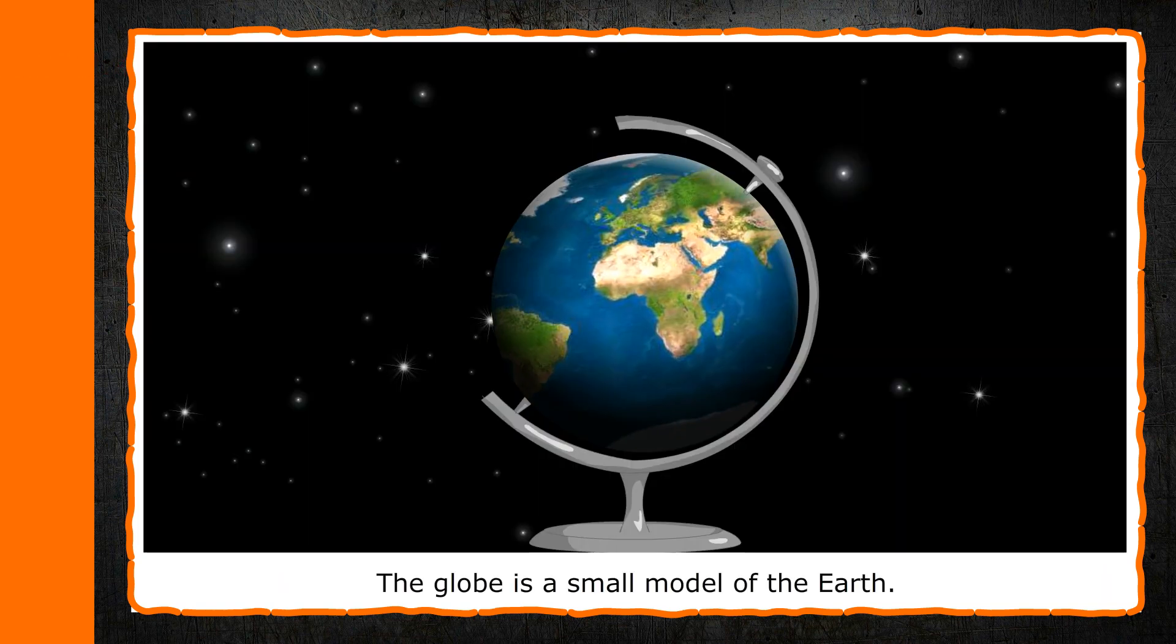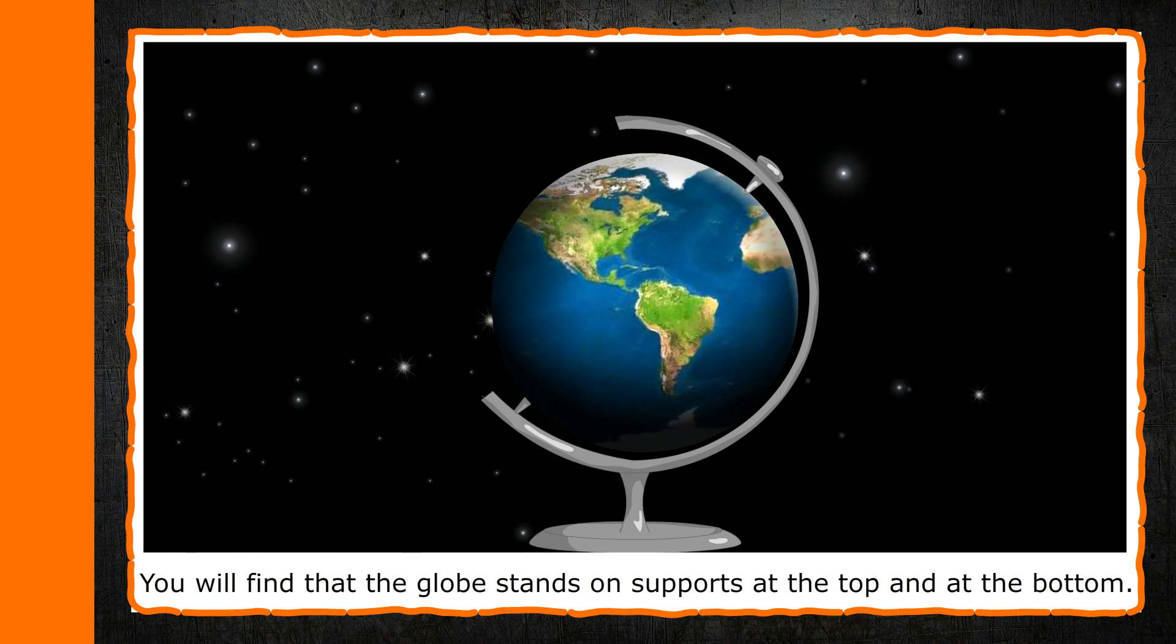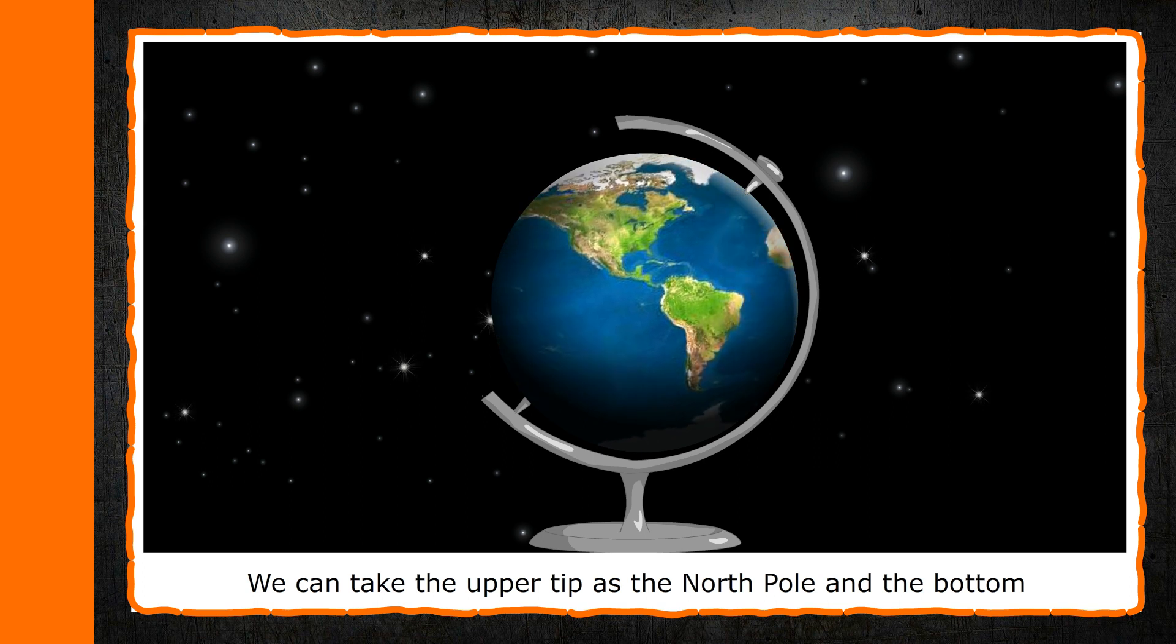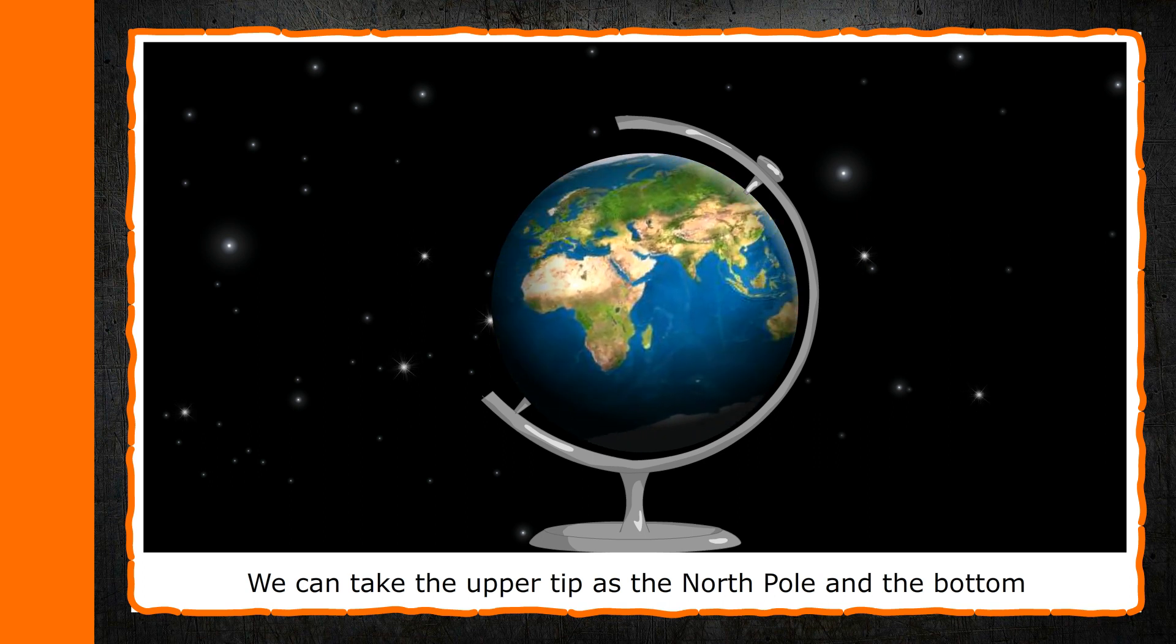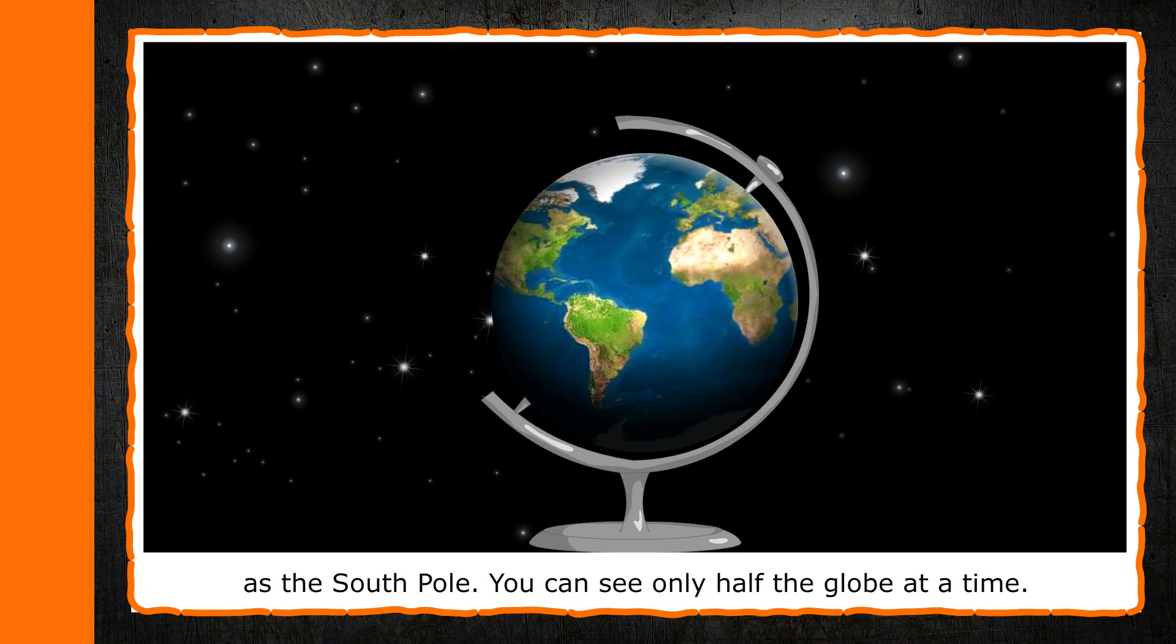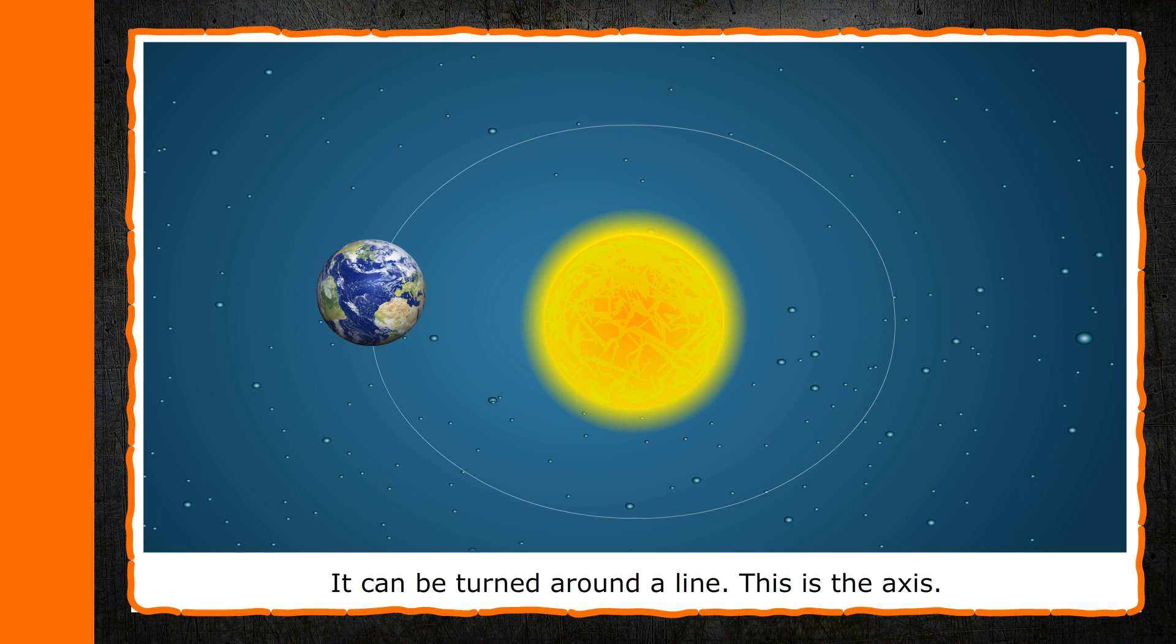Globe. The globe is a small model of the earth. You will find that the globe stands on supports at the top and at the bottom. We can take the upper tip as the north pole and the bottom as the south pole. You can see only half the globe at a time. It can be turned around a line. This is the axis.